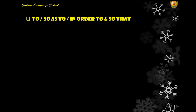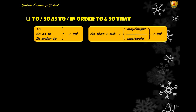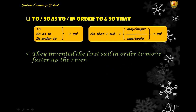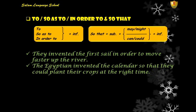What is the difference between 'to', 'so as to', 'in order to', and 'so that'? The first three — 'to', 'so as to', 'in order to' — are followed by an infinitive. For example: 'They invented the first sail in order to move faster up the river', or 'to move faster', or 'so as to move faster.' But 'so that' is followed by a sentence with a subject plus may/might/can/could plus the infinitive. For example: 'The Egyptians invented the calendar so that they could plant their crops at the right time.'